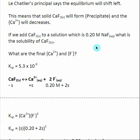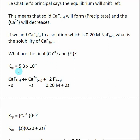Let's look at a calculation. Say I have a solution with 0.2 M sodium fluoride, which is essentially 0.2 M F⁻. We already have a common ion present, and then I start adding calcium fluoride as a solid. The question is: how much of this calcium fluoride is going to dissociate with the common ion already present — what is the solubility? Once I find the solubility of CaF₂, I can find [Ca²⁺] and [F⁻]. I need the Ksp for this equilibrium.